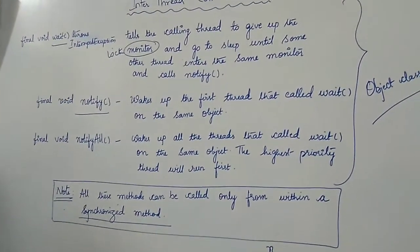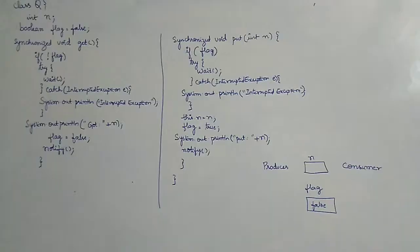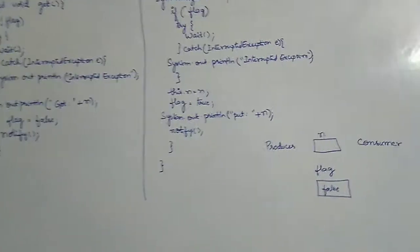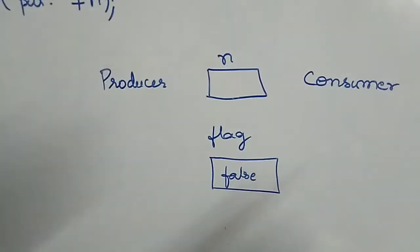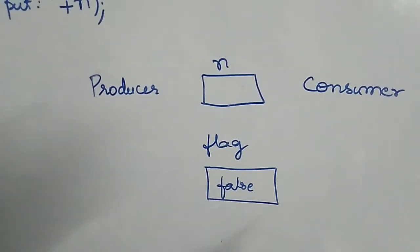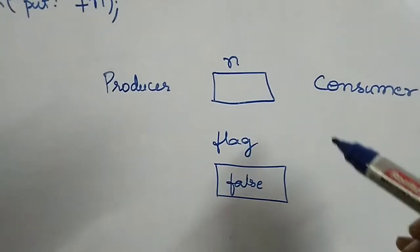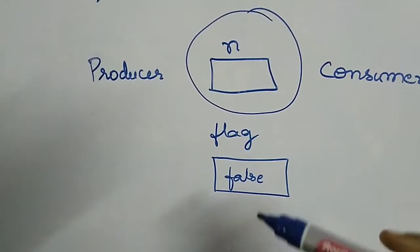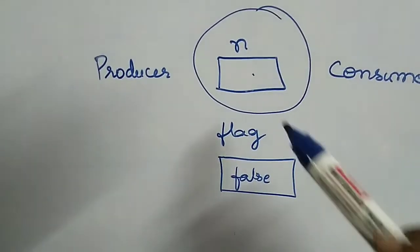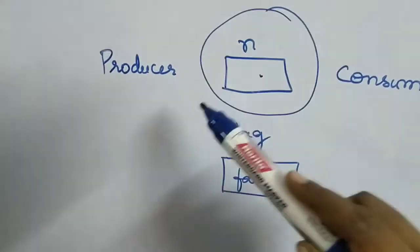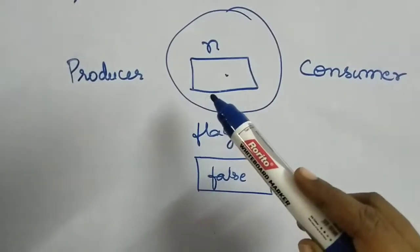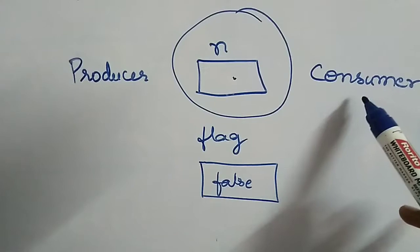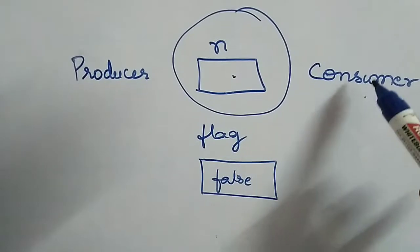We'll write a Java program for the classic producer-consumer problem, which is a classic example of inter-thread communication and synchronization. There are two threads: producer and consumer. The producer generates data and puts it into a common shared buffer. Once the producer puts data in the buffer, it notifies the consumer that data is available and goes to the waiting state.